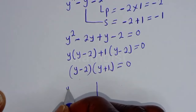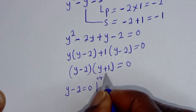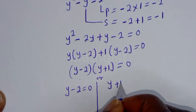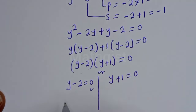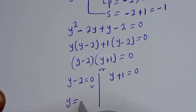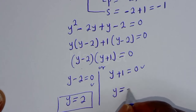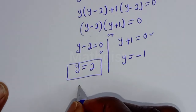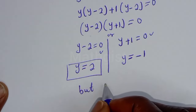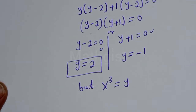There are two cases. The first case is y minus 2 equals 0, and the second case is y plus 1 equals 0. From the first case, y equals 2. From the second case, y equals minus 1.